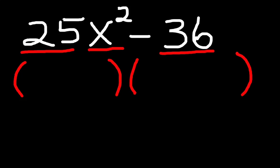We take the square root of 25x squared, that is 5x, because 5x times 5x is 25x squared, and we put it in the first position after each parentheses like this.